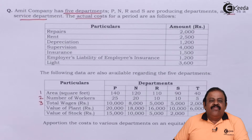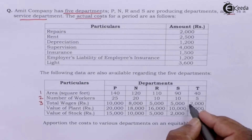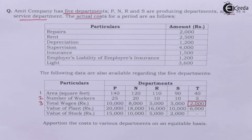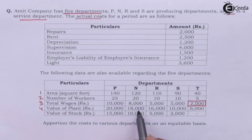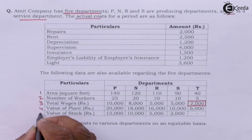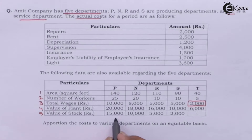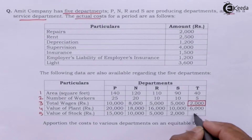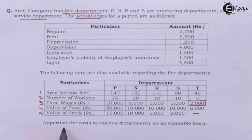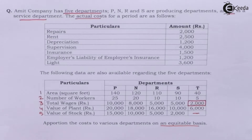Since P, N, R, and S are production departments, total wages for these four departments will not be treated as overheads. Total wages of service department T is rupees 2,000 — even though it is wages, it will be treated as overheads. Value of plant: 20,000; 18,000; 16,000; 10,000; and 6,000. Value of stock: 15,000; 10,000; 5,000; and 2,000 — there is no stock in service department T.